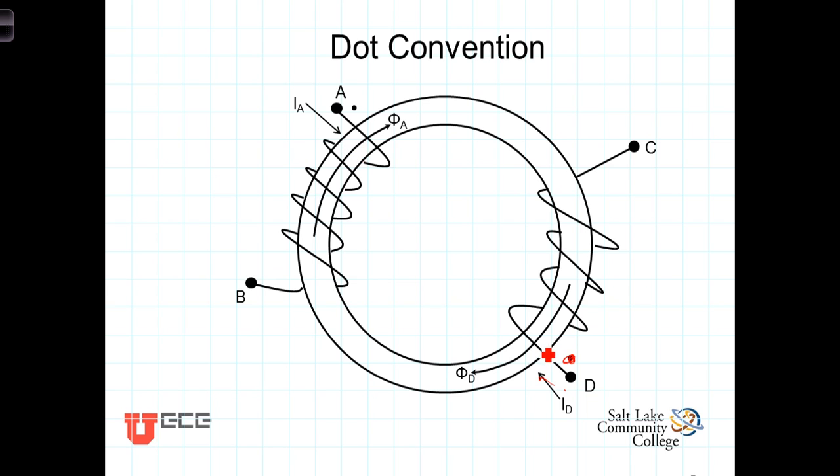If the flux, the magnetic field that is created by this one, is oriented in the same direction as the magnetic field created by the current going in the other one, you dot that terminal. So, right-hand rule. Current is coming in in that direction. Put your fingers in the direction of flow and your thumb points in the direction of the magnetic field.